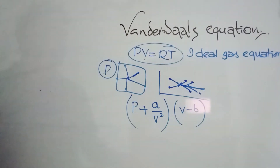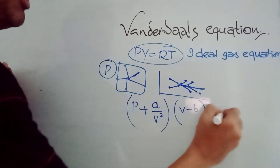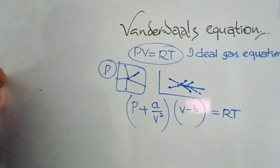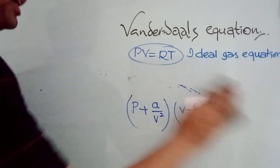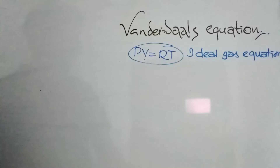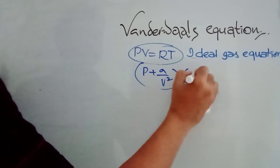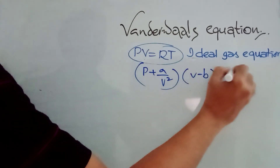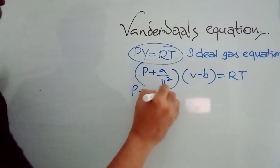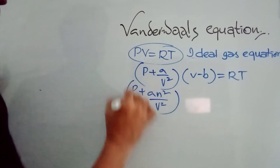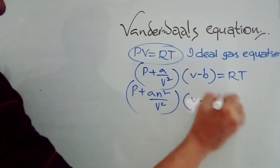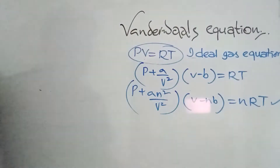So the Van der Waals equation becomes: (P + A/V²)(V - B) = RT. This is for one mole. For n moles, the equation is (P + An²/V²)(V - nB) = nRT.